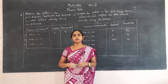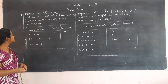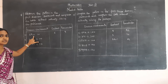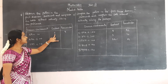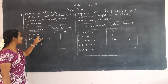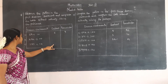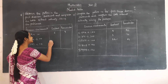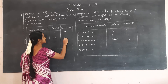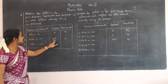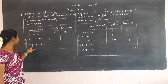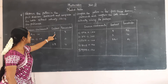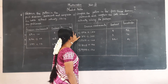Good morning students. Today we are going to solve mental maths. The first problem is to observe the pattern in the first division statement and complete the table without actually solving the problems. The first statement is 69 divided by 10: the quotient is 6 and the remainder is 9. When 432 is divided by 10, the first two numbers, 43, will be the quotient and 2 will be the remainder. For three-digit numbers, the first two numbers will be the quotient and the last number will be the remainder. Here, 29 will be the quotient and 7 will be the remainder.